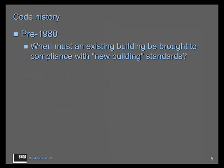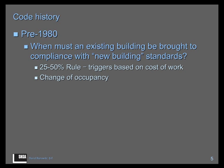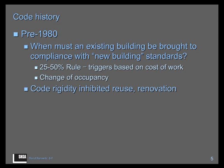When must the existing building be upgraded? That is not a new question. Before 1980, there were some very rough ideas of when that should happen, and the only provisions available were those for new buildings. So really, the only question was when an existing building had to meet new building provisions. There were a few rules in the code — well-intentioned, but they didn't work well, because those very bright lines ended up discouraging work in existing buildings.